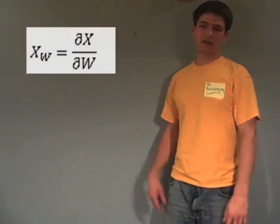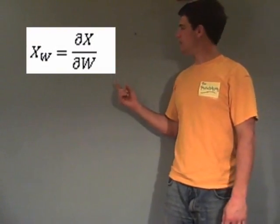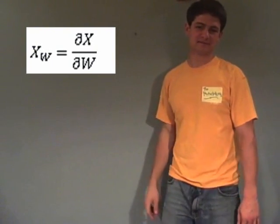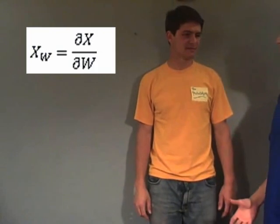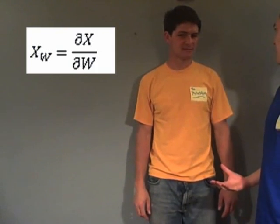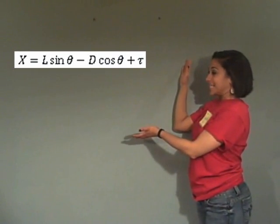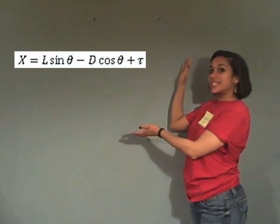But how do we get there? Well, we start off with xw being the partial derivative of x compared to w. That's great! But where does x come from? Well, we start off with the x force equation first, which is just L sine theta minus D cosine theta plus tau.